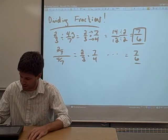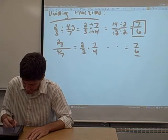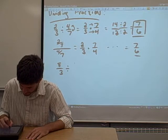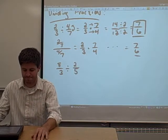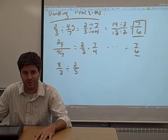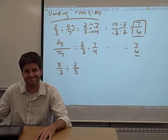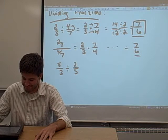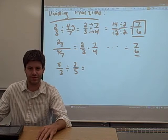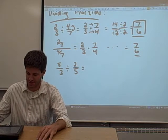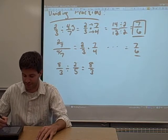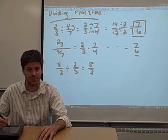So let's try another example. Let's try 8/3 divided by 2/5. Hit pause on your video and give it a shot. So what we're going to do to do this division of fractions is the same thing we did last time. You're going to copy down the first fraction. You're going to flip over the second fraction and multiply.